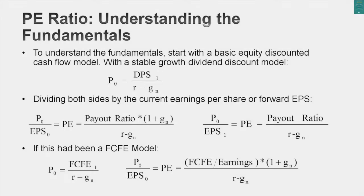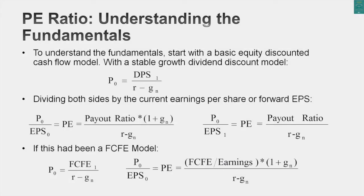The simplest one I can think of is a stable growth dividend discount model — the Gordon growth model. If you divide both sides of that equation by the earnings per share, you have an equation that tells you what the P/E ratio for a stable growth dividend-paying company should be, and the variables that should drive that P/E ratio.